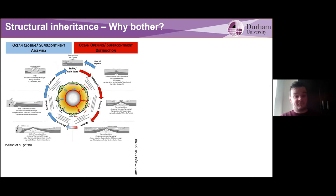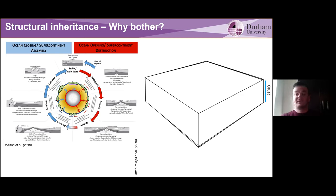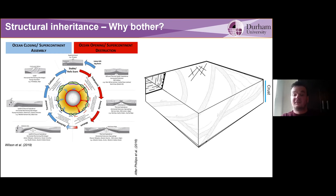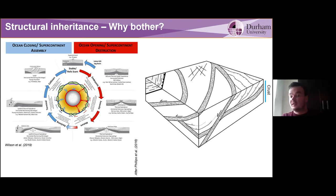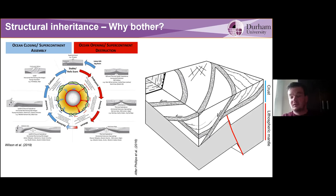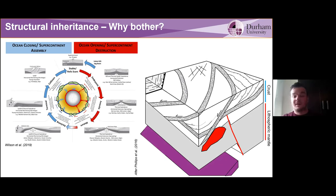However, this is based on the assumption that we have a very homogeneous crust that allows the faults to be randomly distributed throughout, and they're always perpendicular to extension. In reality, when we rift a piece of crust, that crust has undergone multiple cycles of rifting and orogenesis, oceanic closing and opening, and that imparts a lot of different structures into the crust.